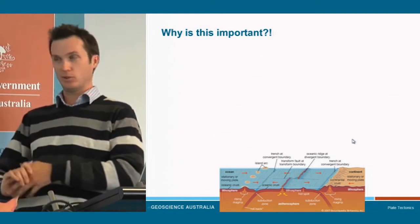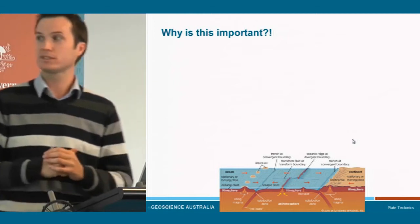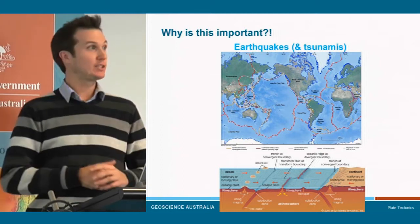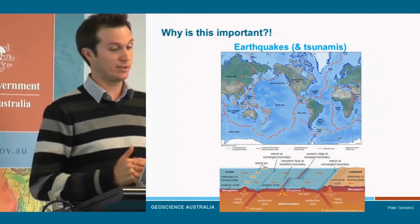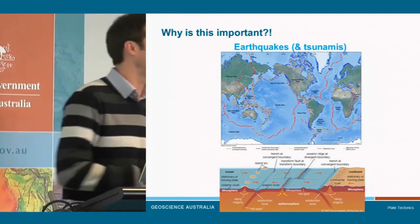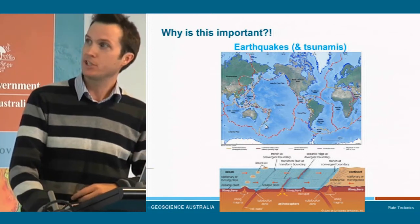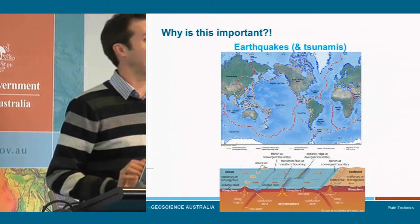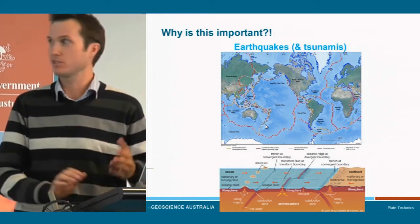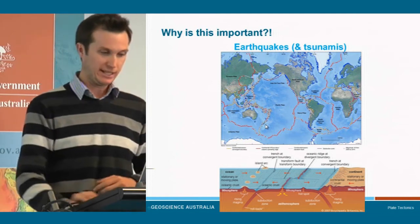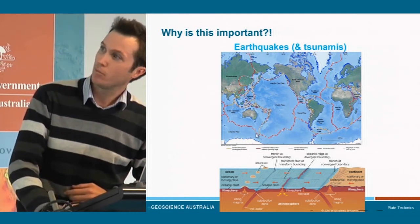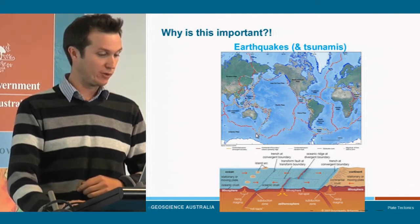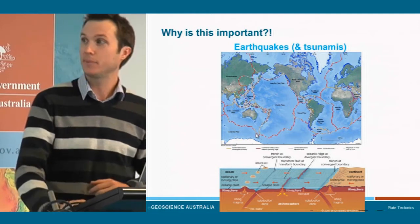Why is all this important for us as humans, and for our work at GA? Firstly, plate tectonics is one of the major reasons why we have Earth hazards. Two main ones are earthquakes and the tsunamis that earthquakes may generate. Looking at this image, all these circles represent earthquakes with a magnitude greater than six that have happened from 2005 to 2015. You can see they generally occur at or on these plate margins — a lot of them at subduction zones where plates are being subducted beneath other plates.